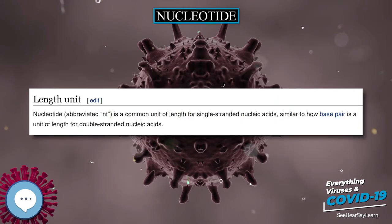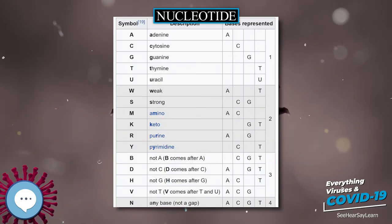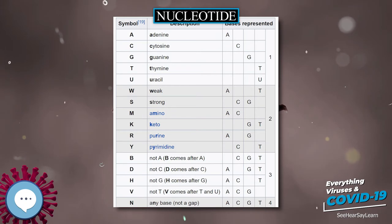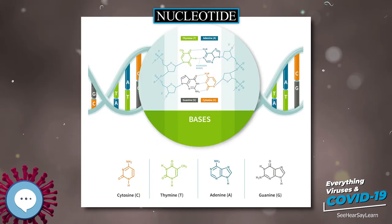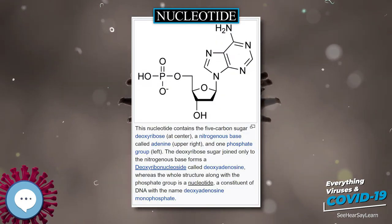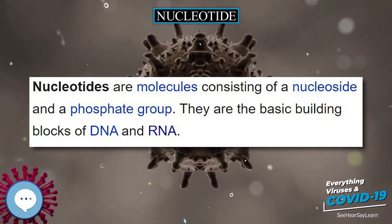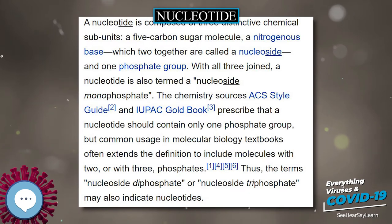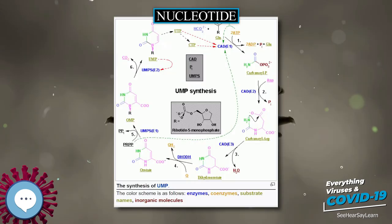Orotate is covalently linked with a phosphorylated ribosyl unit; the covalent linkage between ribose and pyrimidine occurs at position C1 of the ribose (which contains a pyrophosphate) and N1 of the pyrimidine ring. Orotate phosphoribosyltransferase (PRPP transferase) catalyzes the net reaction yielding orotidine monophosphate (OMP). Orotidine-5'-monophosphate is then decarboxylated by orotidine-5'-phosphate decarboxylase to form uridine monophosphate (UMP).